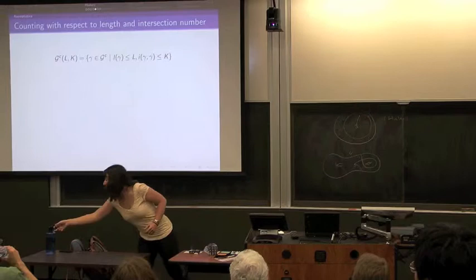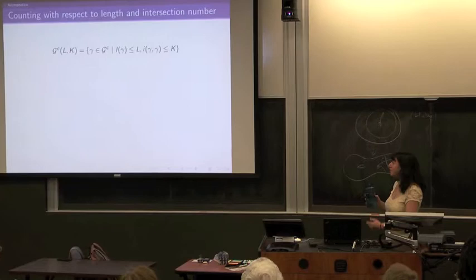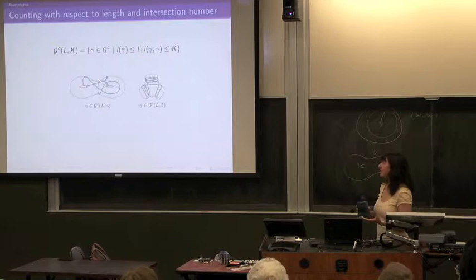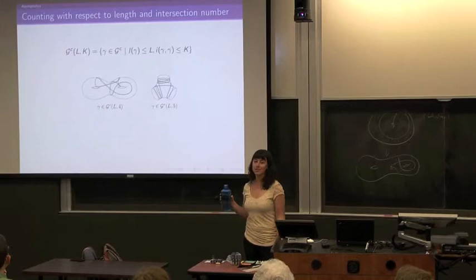Let's talk about length and intersection number. GC(L,K) is going to be the set of curves with length at most L and at most K self-intersections. Here's a picture on a closed surface of a curve with four self-intersections — it's in GC(L,4), of course also in GC(L, a million) or whatever.